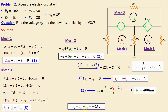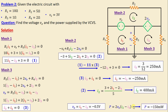Now, vx is equal to i1 minus i3, giving us vx equal to negative 0.5 volts. The power supplied by the dependent source is equal to 2 vx multiplied by (i2 minus i3), and we get the power equal to negative 150 milliwatts. After completing the calculations, we conduct a simulation using SPICE to verify our results.